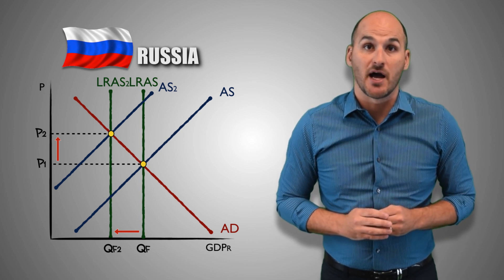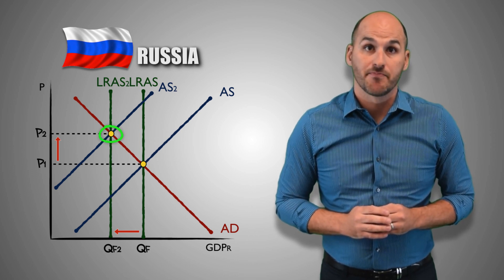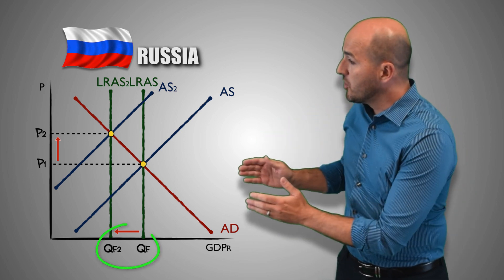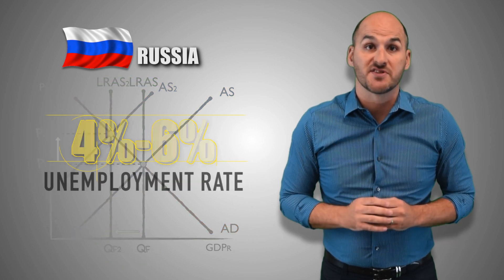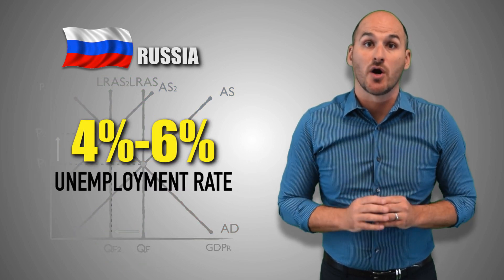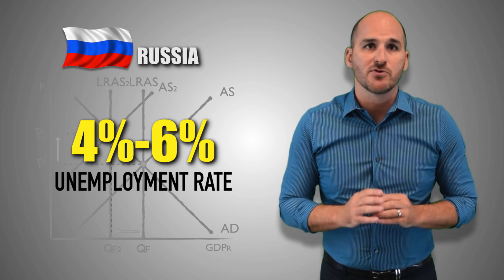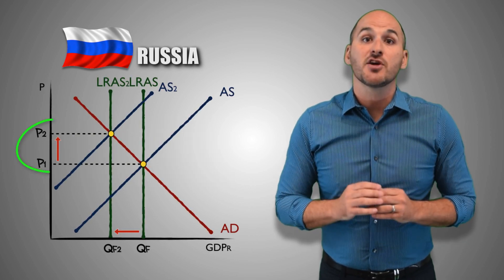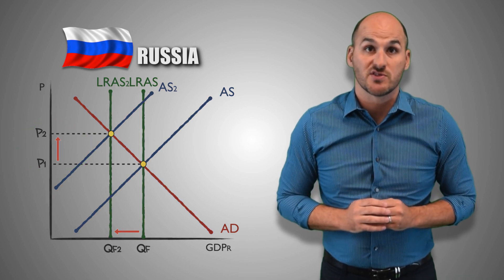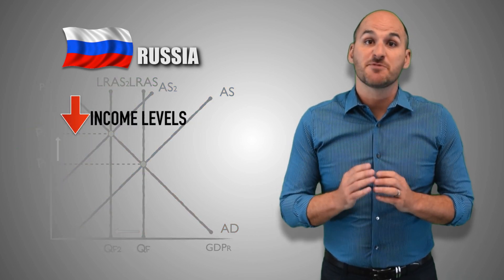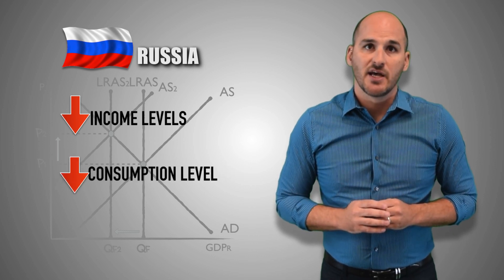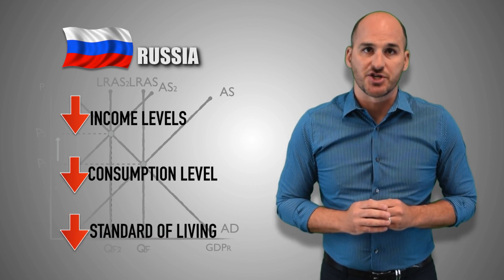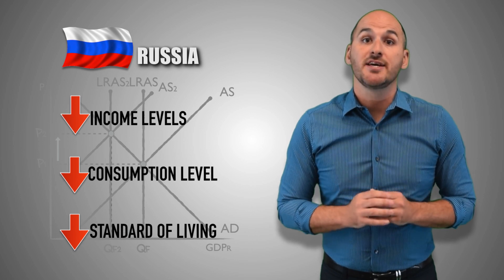With this fundamental change in long-run aggregate supply, the Russian economy has a new long-run equilibrium. With the full employment of its resources, the Russian economy's potential to produce real GDP output decreases from QF to QF2. The unemployment rate at QF2 is still 4–6%, but the workers who are currently employed can't produce the same quantity they used to because there are fewer resources. Prices increase in the long run, the national income level falls, consumption levels decrease, and the standard of living decreases in Russia as real GDP per capita falls.